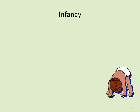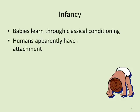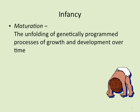Welcome to week 15 — we are starting Development Two and have a lot of content this week. Last week we talked about fetal development, embryos to fetuses, starting with zygotes, and now we're hitting infancy. Babies learn through classical conditioning and through the development of their social and cognitive skills. Humans apparently have an inborn need for attachment. Secure attachment, anxious-ambivalent attachment, and avoidant attachment are the three major types of attachment.